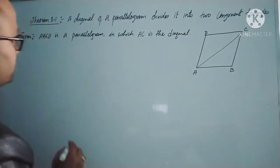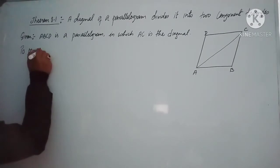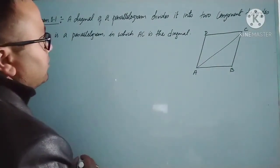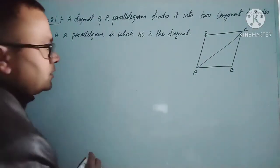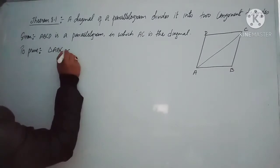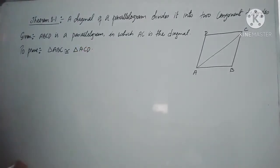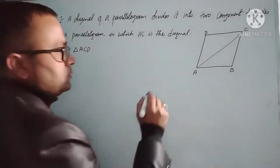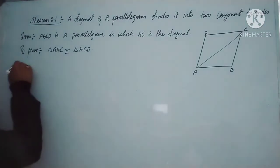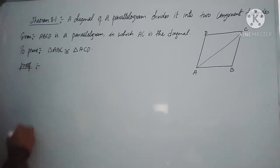Now we need to prove: the diagonal of a parallelogram divides it into two congruent triangles, meaning triangle ABC is congruent to triangle ACD. Now we move to the proof — this is the procedure or algorithm of the proof.